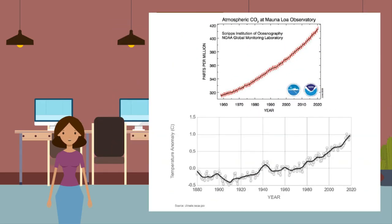Emissions of greenhouse gases due to human activities are thought to be a bigger influence on current global warming than natural causes. Average global temperatures are projected to increase by as much as 4 degrees Celsius by the end of the century — projected between 1.8 and 4 degrees Celsius due to human activities. A graph of atmospheric CO₂ recorded since 1958 and a graph of average temperature anomaly since 1880 show that global temperatures are rising in a similar pattern to the levels of CO₂ in the atmosphere.